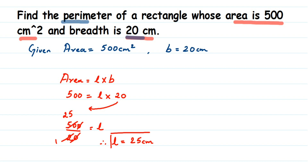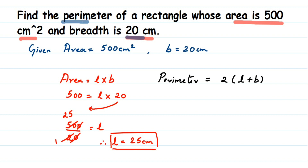Now that we have the length and we already know the breadth, we can find the perimeter. The perimeter of a rectangle is 2 × (L + B). Substituting the values: perimeter = 2 × (25 + 20). Inside the bracket, 25 + 20 = 45, so perimeter = 2 × 45.